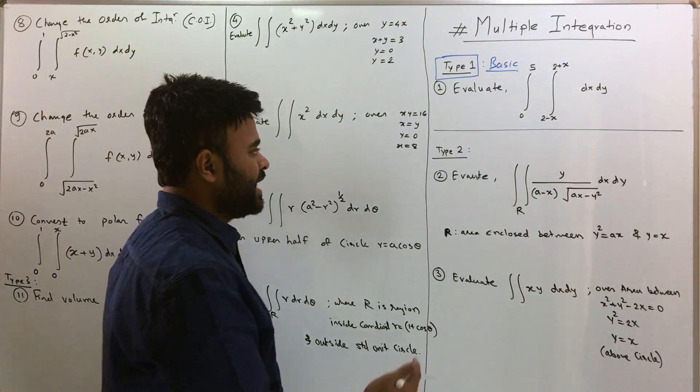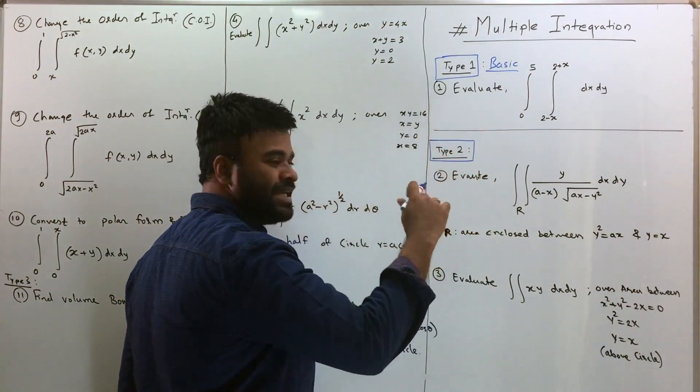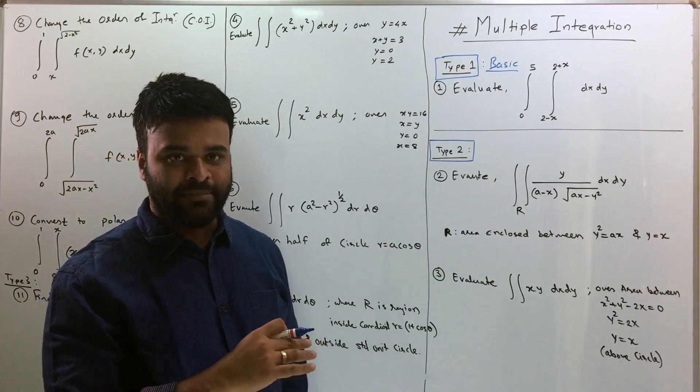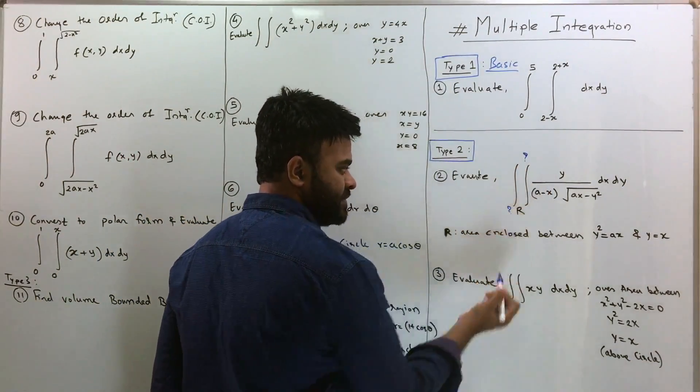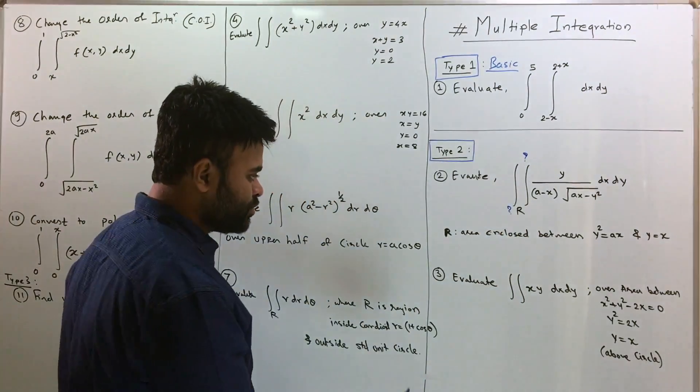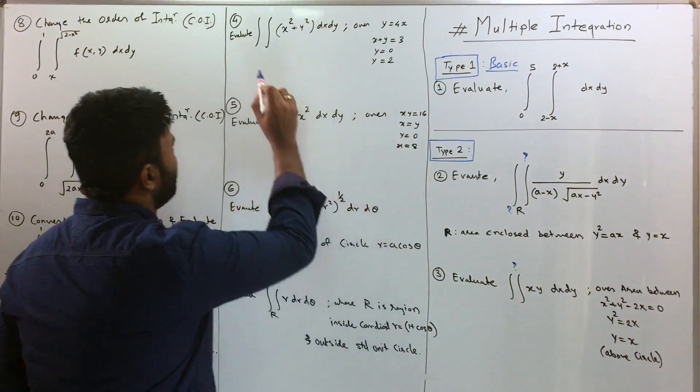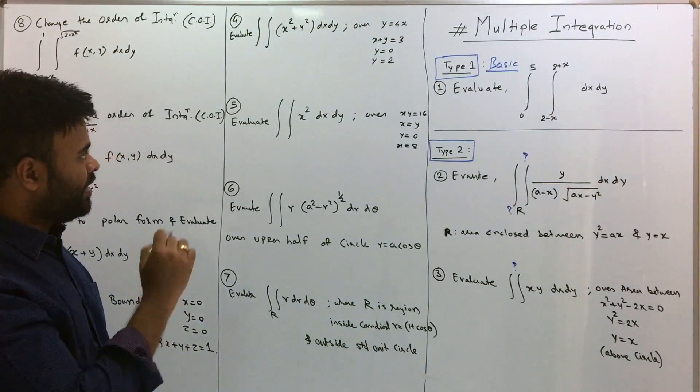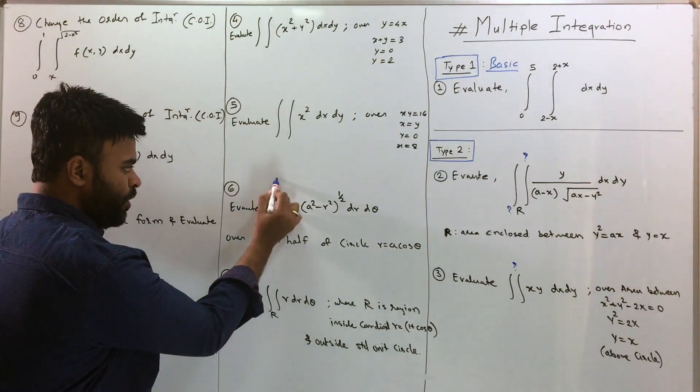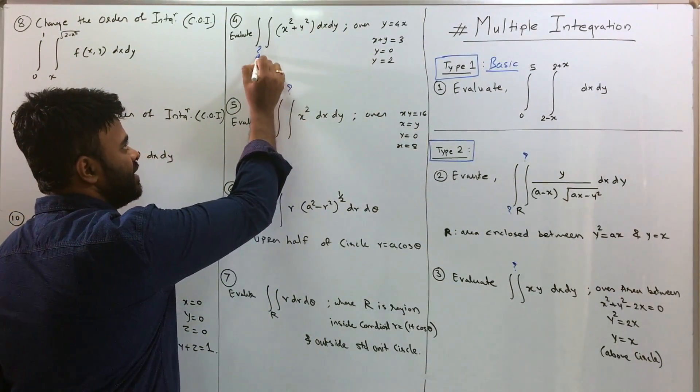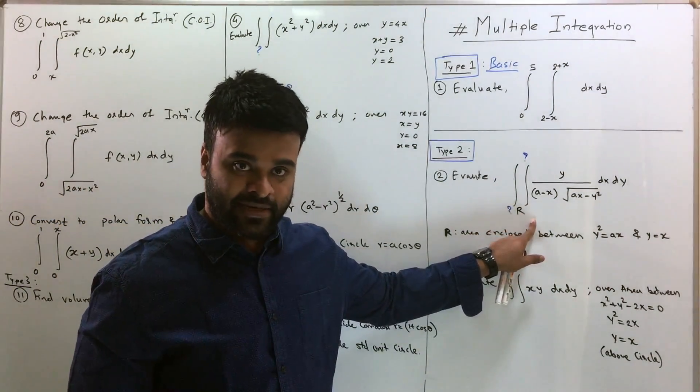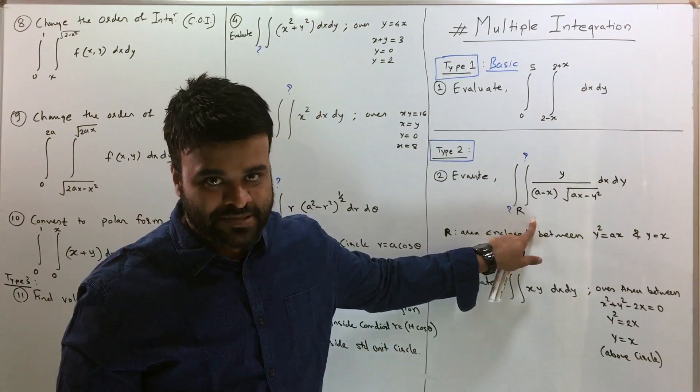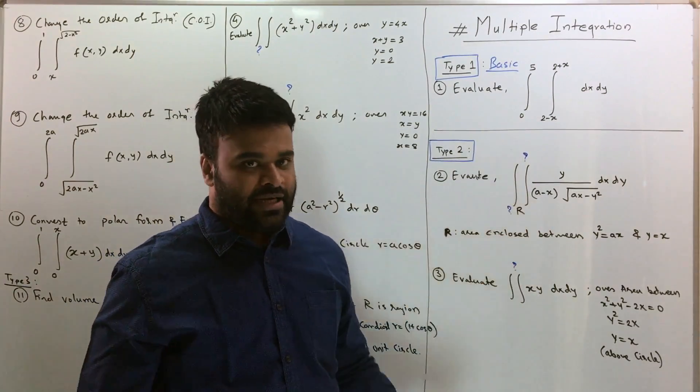Now moving on to type 2. Now in the type 2, if you see the difference between type 1 and type 2, the limits for the integral are not given. And that is true for all, like question number 3, 4, 5, 6, 7, all these 7 questions, you do not have the limits of integral. So now what you have to do is, before you go to solve this integral, you have to figure out the limits first and then solve the integral.